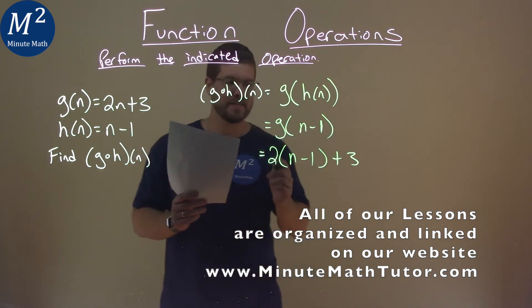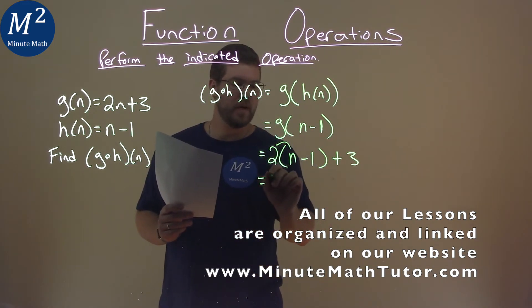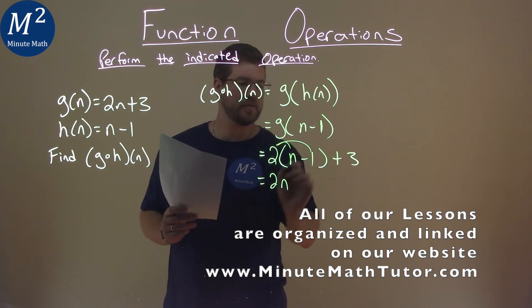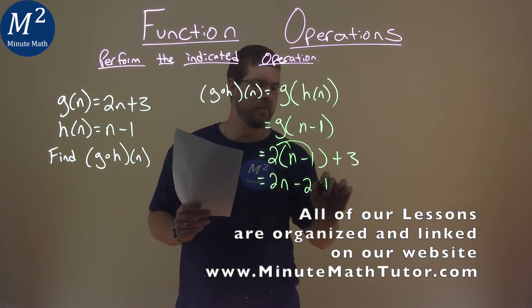Now we need to simplify. Distribute the 2, and we have 2n here, and 2 times negative 1 is negative 2, and then we have plus 3.